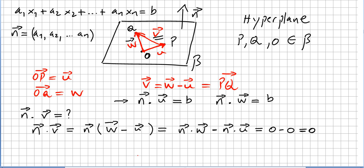So our conclusion is: if we pick the normal vector n and compute the dot product with PQ — any vector where points P and Q are in the hyperplane — we always get zero. Therefore, n will always be orthogonal to any vector in the hyperplane.